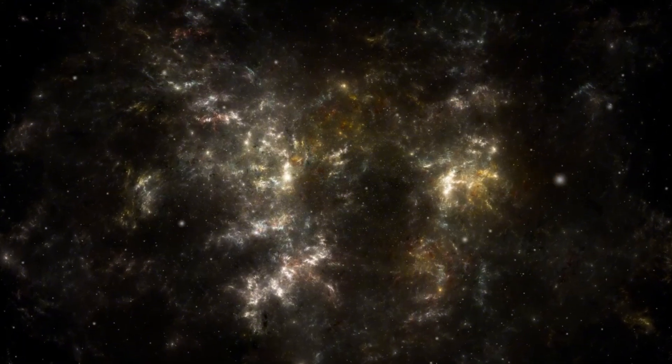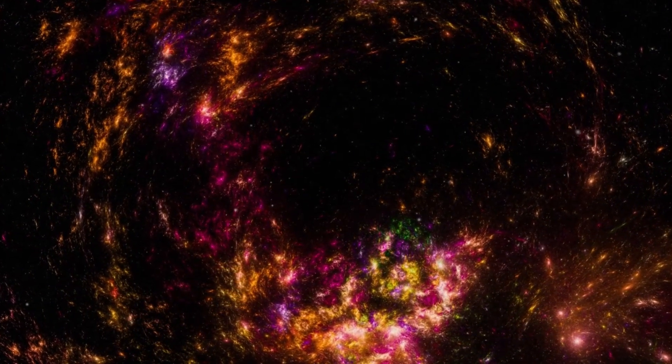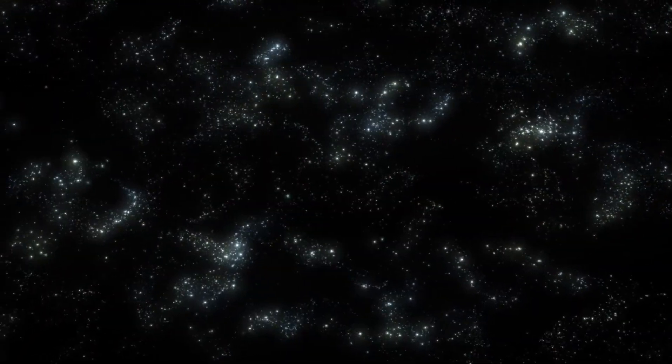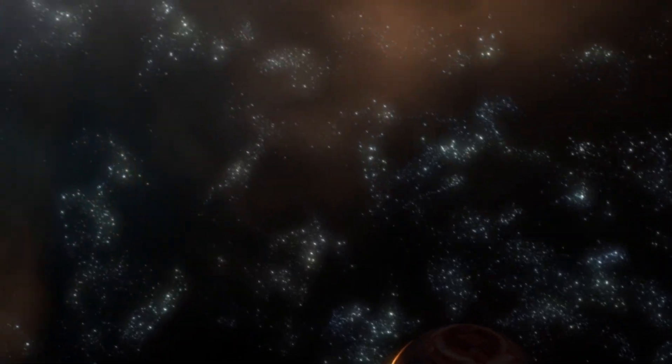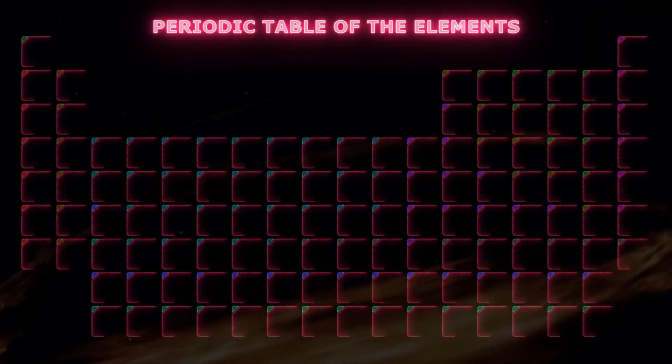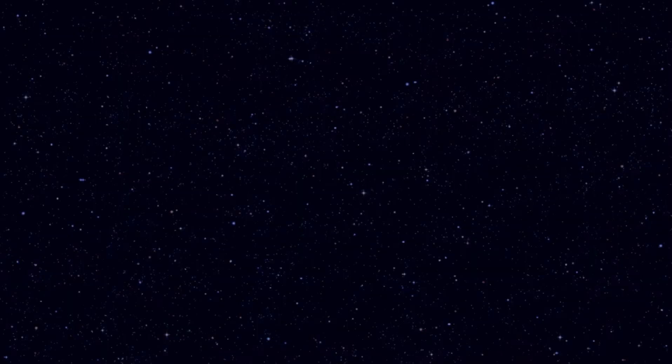Recently, Betelgeuse has exhibited dramatic and irregular changes in brightness, sparking widespread speculation among astronomers and enthusiasts alike. These dimming and brightening episodes are thought to signal the star's imminent demise, culminating in a spectacular supernova.